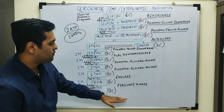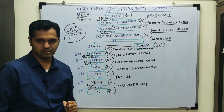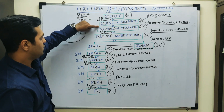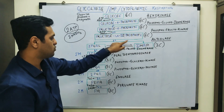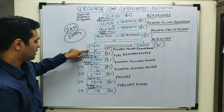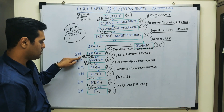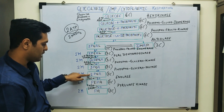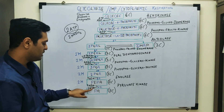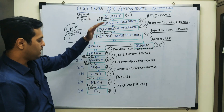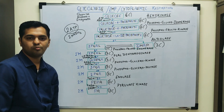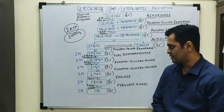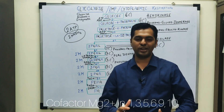To summarize the 10 reactions of glycolysis: Step 1 phosphorylation, Step 2 isomerization, Step 3 phosphorylation, Step 4 cleavage, Step 5 isomerization, Step 6 oxidation and phosphorylation, Step 7 ATP generation, Step 8 shifting of phosphate (3rd to 2nd carbon), Step 9 dehydration, Step 10 ATP generation. By the end of glycolysis, two molecules of pyruvic acid are formed, and their further fate depends on whether aerobic or anaerobic respiration follows. Stay tuned for further videos.